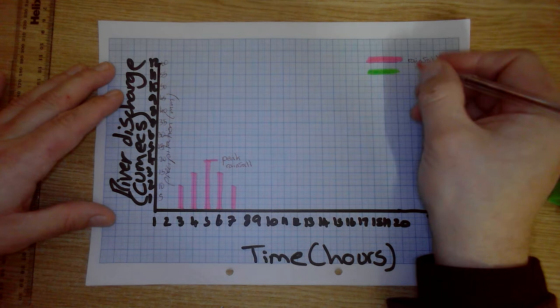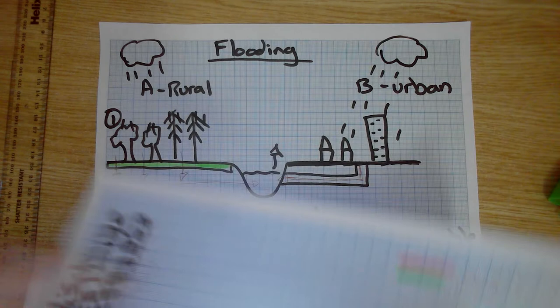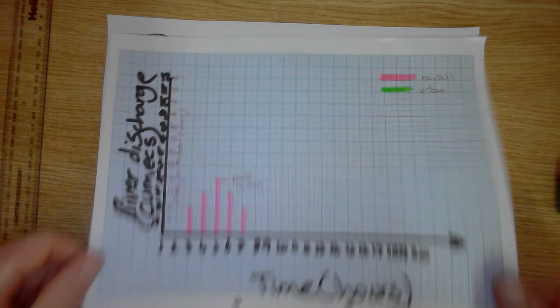Now, remember, we'll flip back. Urban, the rain hits the concrete, goes down the drain, goes to the river. And, we will have yellow for rural.